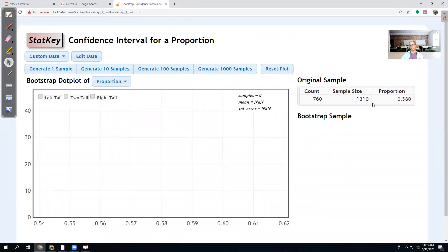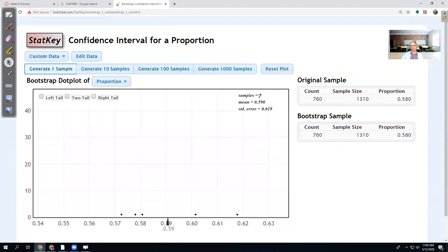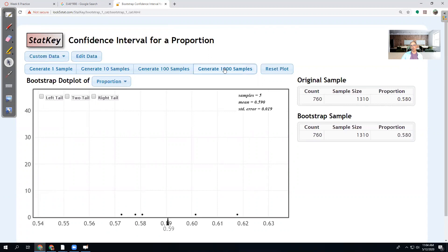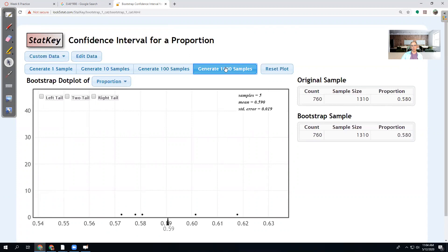So then what we do is we start regenerating samples. So if I did one sample, then StatKey basically makes a deck of cards that has 1,310 cards in it. 760 say yes, the others say no. It shuffles the deck and redraws and looks and puts the card back in another 1,310 times. So based on that deck of cards and a random shuffling and drawing, this time 757 people said yes. And we can just keep doing that one sample at a time. So right now I have five different samples. Each of these samples is 1,310 people. But each time it's a slightly different number of people that said yes. But since it's based on the original sample, it shouldn't be too far away.